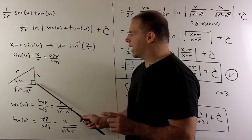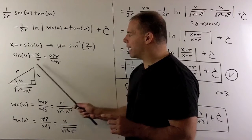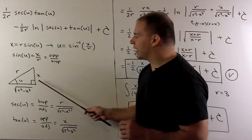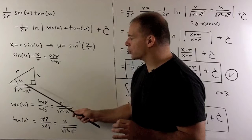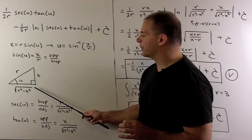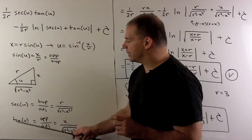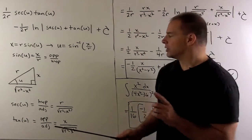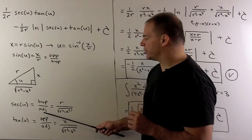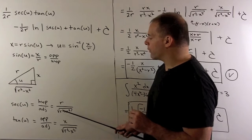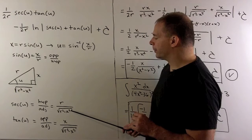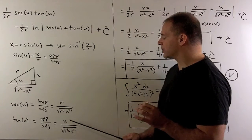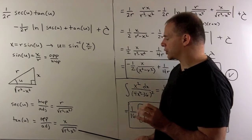So, the opposite leg will have length x, the hypotenuse will have length r. By the Pythagorean theorem, the adjacent leg will have length square root of r squared minus x squared. We can work out secant and tangent now. Secant is 1 over cosine. So, that's equal to hypotenuse over adjacent. That's going to be equal to r over square root of r squared minus x squared. Tangent is opposite over adjacent. So, we get x over square root of r squared minus x squared.